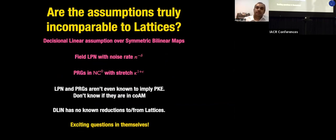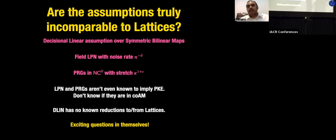Of course I can't conclusively answer this unless we resolve some long-standing deep complexity questions, but we can reason based on our current understanding. From what we know, the LPN and PRG-in-NC0 assumptions aren't even known to imply something as basic as public-key encryption, whereas lattice-based assumptions such as Gap-SVP and LWE readily imply public-key encryption. This indicates either we don't know how to build it, or these assumptions may simply not be strong enough.